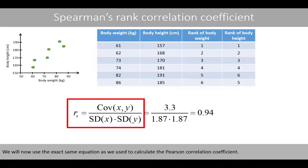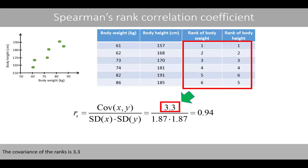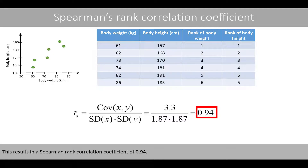We'll now use the exact same equation as we used to calculate the Pearson correlation coefficient. The only difference is that we'll now use the ranks instead of the original data. The covariance of the ranks is 3.3, and the standard deviation of the individual ranks is 1.87. This results in the Spearman rank correlation coefficient of 0.94.